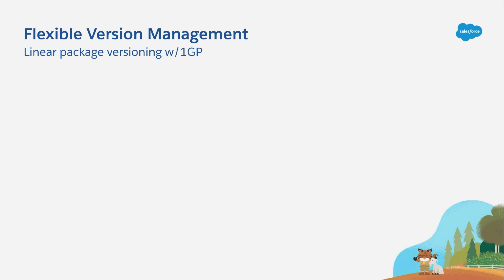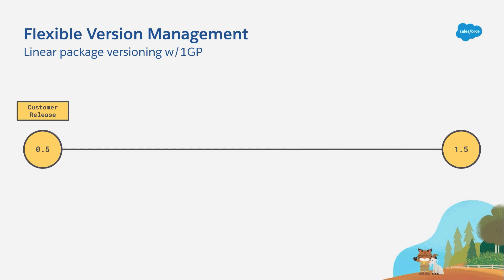To really understand the value of Flexible Version Management in 2GP, it helps to quickly look at how linear package versioning works with 1GP. Imagine a partner who's published a golden master of their app at version 0.5 — in other words, it's something that they want customers to install.